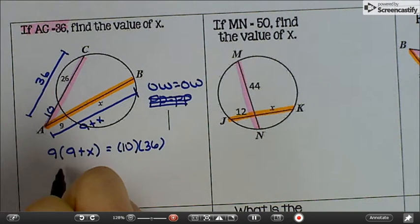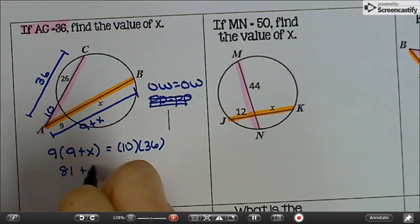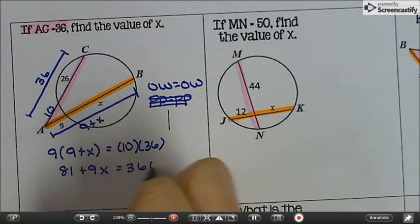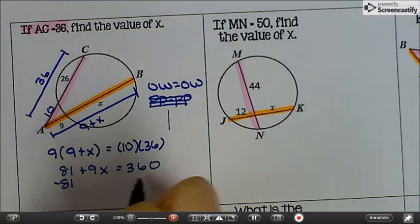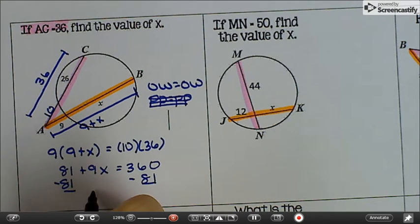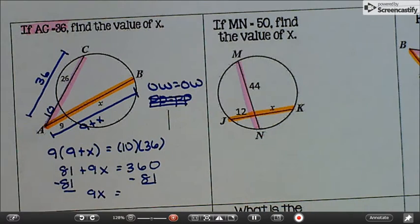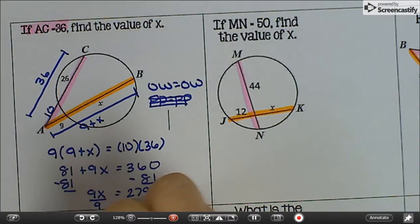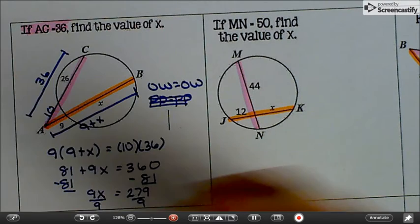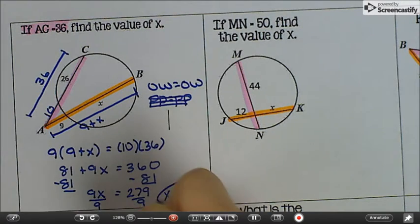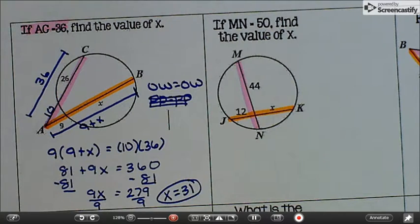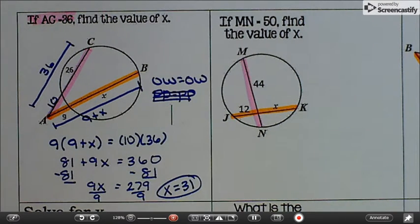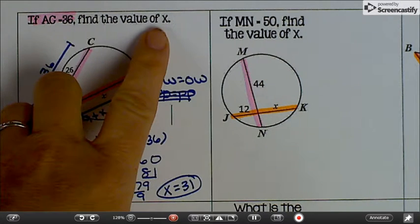10 plus 26 is 36, so outside times whole equals outside times whole. We're going to solve. So x equals 31, not 31 degrees, just 31 because we're looking for a segment of a length. Also it says up here to find the value of x and we did, so we're done.